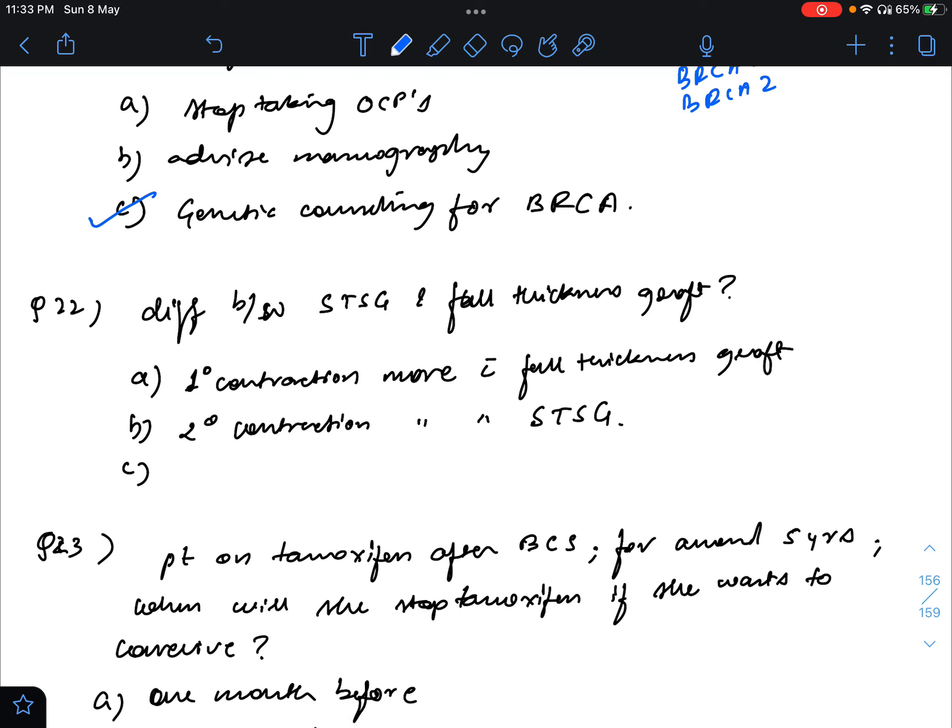Next question was, difference between split thickness skin graft and full thickness graft. So in this case, the answer is that primary contraction is more with full thickness graft. Secondary contraction is more with split thickness skin graft. So actually, primary contraction means that immediately after, like after we have done the surgery, within one to two days, the contraction that we will get is called primary contraction.